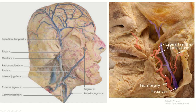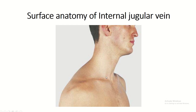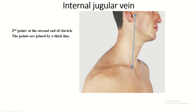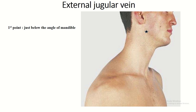This is the facial artery and this is the facial vein. Surface anatomy of the internal jugular vein: first point in front of the tragus, second point at the sternal end of the clavicle. Join these points by a thick line.